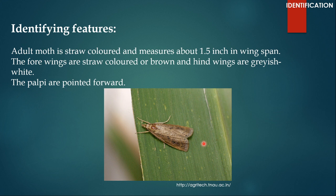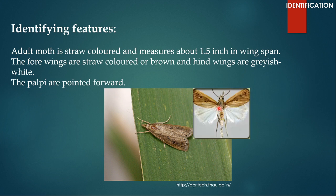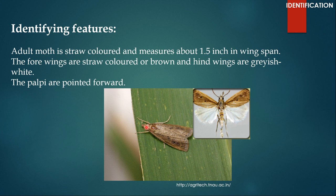How can we identify this moth? The adult moth is straw colored and measures about 1.5 inches in wingspan. The four wings are straw colored, but the hind wings are grayish white. So when the insect sits at rest, you can only see the straw colored forewings, but if the wings are stretched, then the hind wings are visible and they are grayish white in color. The labial palpi are pointed forward. By looking at these characteristics, we can identify Chilo infuscatellus.